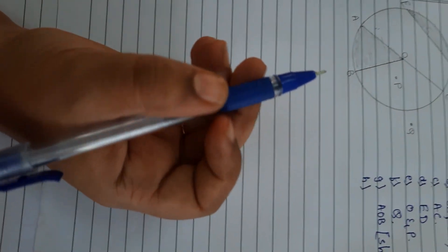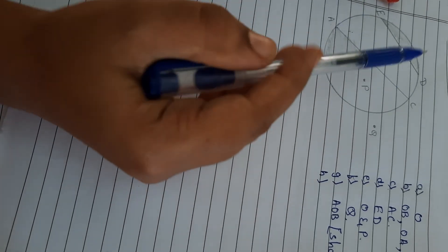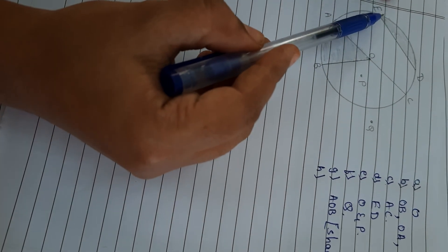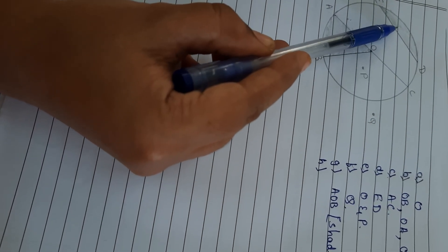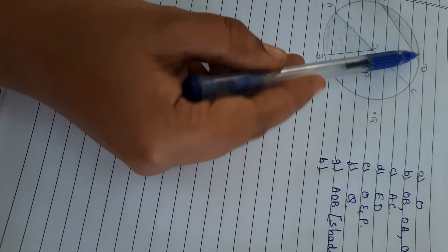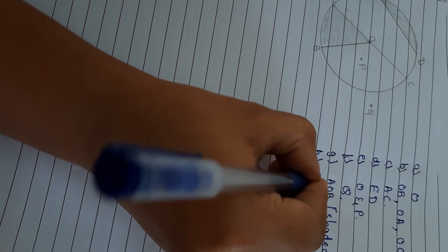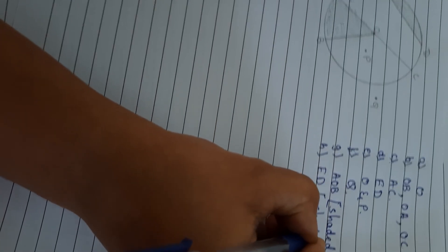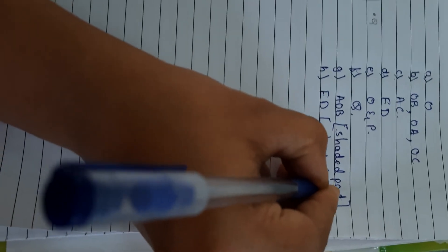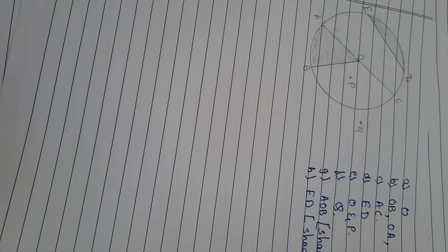Next, H — a segment. Segment means the region between the arc and the chord. This place is called segment. The name is ED — in brackets you have to write shaded part. So this is what we have finished for the first main.